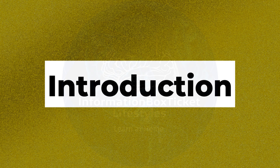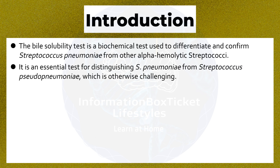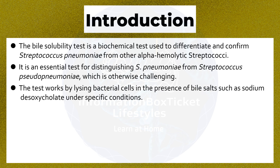The Bile Solubility Test is a biochemical test used to differentiate and confirm Streptococcus pneumoniae from other alpha-hemolytic streptococci. It is an essential test for distinguishing S. pneumoniae from Streptococcus pseudopneumoniae, which is otherwise challenging. The test works by lysing bacterial cells in the presence of bile salts such as sodium desoxycholate under specific conditions.